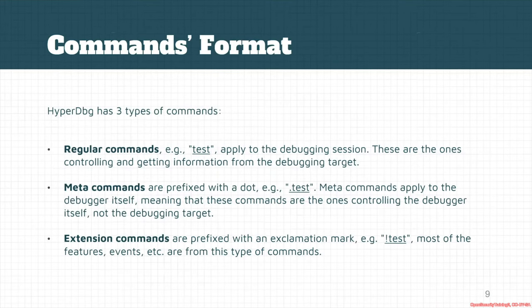In HyperDbg, exactly like WinDbg, we borrowed the command format from WinDbg because it makes it easier for users to adapt with this debugger. HyperDbg has three types of commands like WinDbg: regular commands, meta commands, and extension commands.